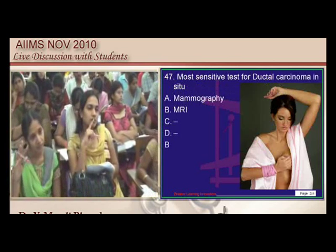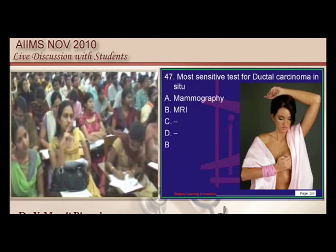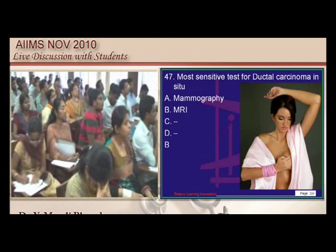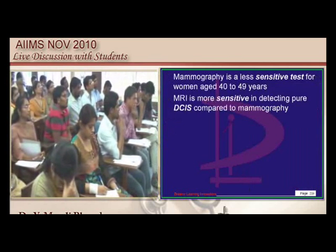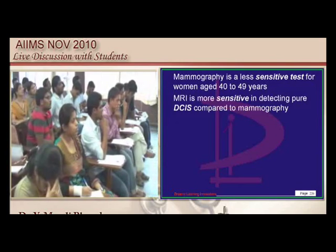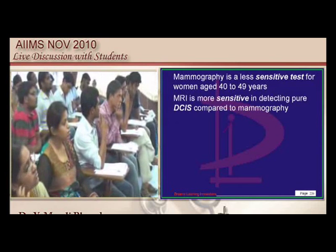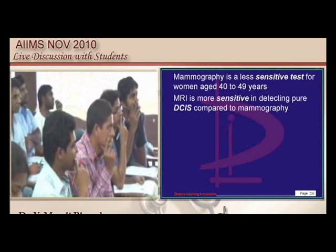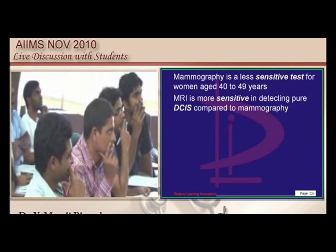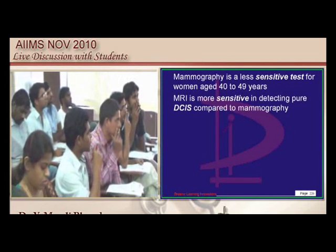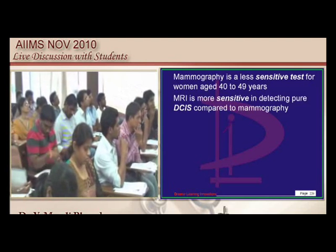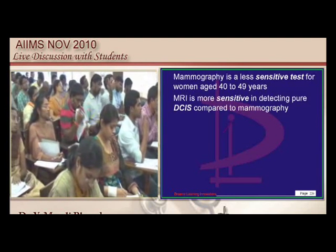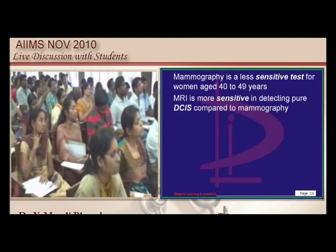What is the most sensitive test for ductal carcinoma in situ? Sensitivity-wise, MRI is more sensitive compared to mammography. In women between 40 to 50 who have thicker breasts, mammography can fail but MRI can still detect the lesion. Hence the sensitivity of MRI is much higher for ductal carcinoma in situ.